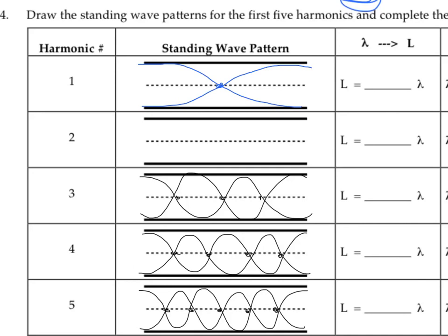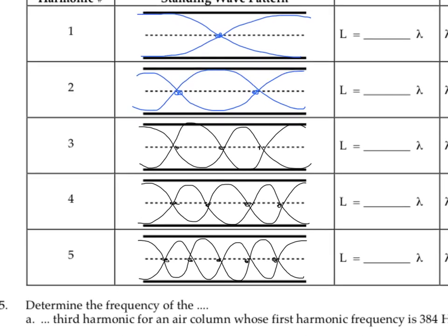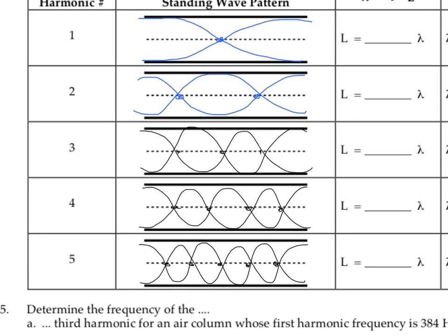The second harmonic has two nodes and still antinodes at each end, and so it looks something like this. And I've gone ahead and drawn in the third, fourth, and fifth harmonics as well. You can see at the third harmonic there are three nodes. The fourth harmonic there are four nodes, and the fifth there are five nodes.